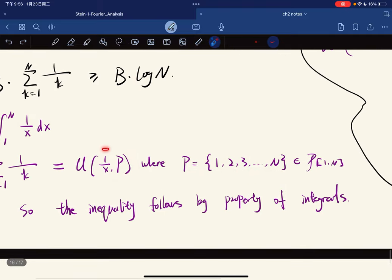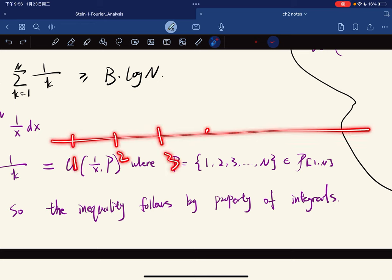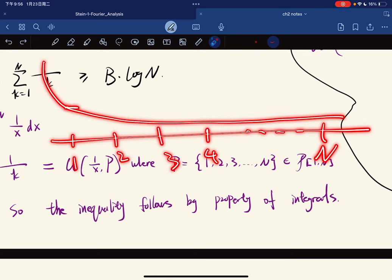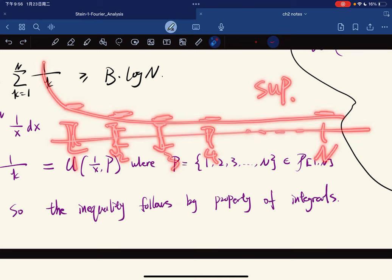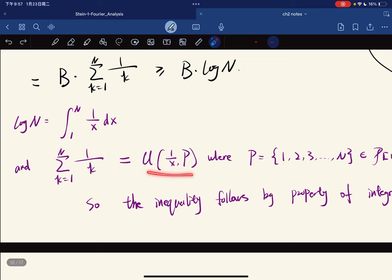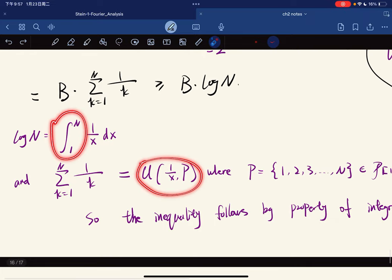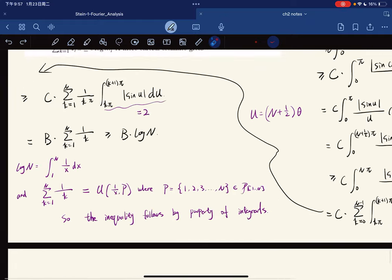This sum is the upper sum of the function 1/x with the partition P where P is 1, 2, 3, ..., n. This is the upper sum. If you have 1, 2, 3, ..., n and a function that is decreasing, each part chosen is the supremum of this interval times 1 (the length of each subinterval is 1). The inequality follows from the property of integrals—an upper sum is greater than or equal to the integral by definition of Riemann integral.